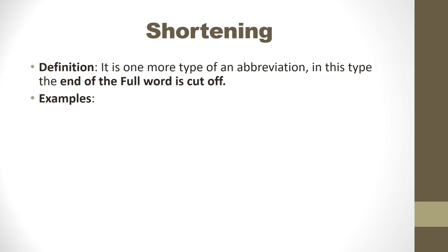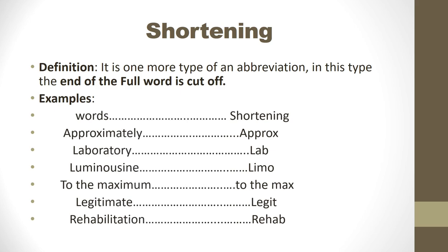The next type of abbreviation is shortening. Its definition is one more type of abbreviation in which the end of the full word is cut off. Examples: approximately is shortened to approx, library to lib, limousine to limo, to the maximum to to the max, legitimate to legit, and rehabilitation to rehab.